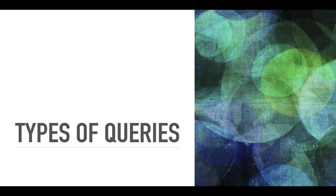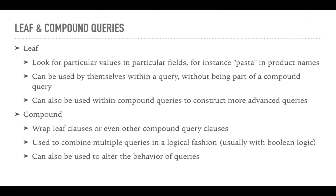Now that I have introduced you to how you can perform searches with Elasticsearch, I will move on to talking about the various types or categories of queries. There are two main types of queries in Elasticsearch: the leaf and compound queries. Leaf queries look for particular values within particular fields — this could be pasta within a product's name field, as in the previous examples. These queries can be used by themselves without being part of a compound query, but they can also be used within compound queries to construct more advanced queries.